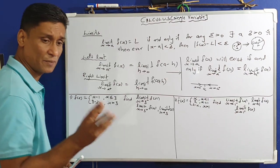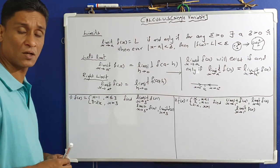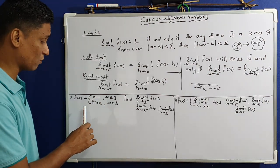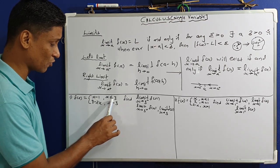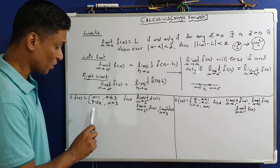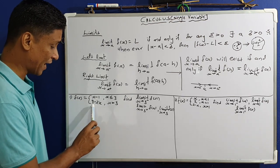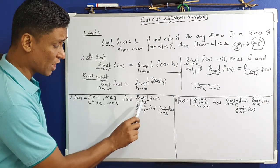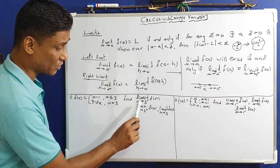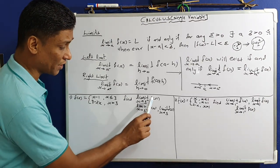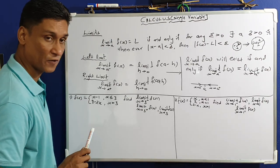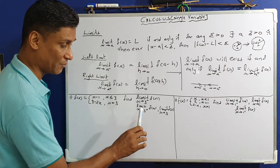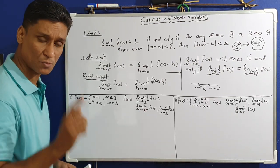Come to the first problem. f of x equals x minus 1 for x less than or equal to 3, and f of x equals 8 minus 2x for x greater than 3. We have to find: limit x tends to 3 minus of f of x, limit x tends to 3 plus of f of x, and limit x tends to 3 of f of x.